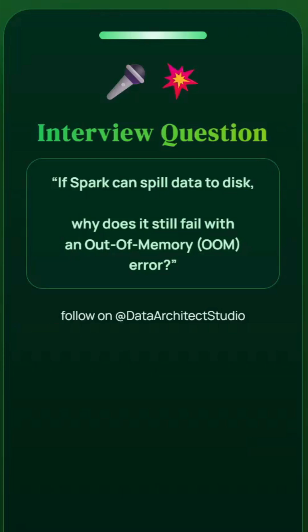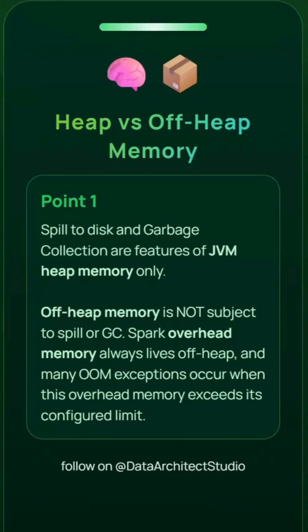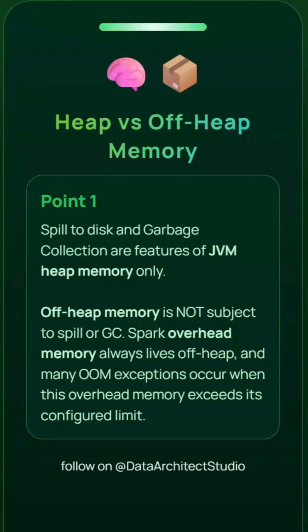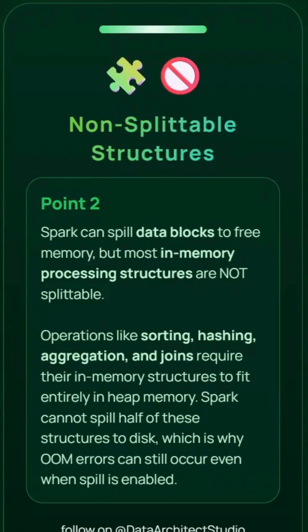Let's reveal the answer — please add it to the comments if you already know it. There are mainly two reasons why Spark can give an out-of-memory exception. The first reason is overhead memory: whatever overhead memory you request for executor or driver overhead will be assigned from the object memory. If the memory requested is more than the available memory, it will obviously throw an out-of-memory exception.